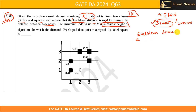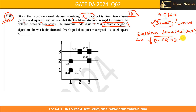The Euclidean distance between point (x1, y1) and (x2, y2) is: distance = sqrt((x1 - x2)² + (y1 - y2)²). This is the distance between two points P1 and P2 having coordinates (x1, y1) and (x2, y2).